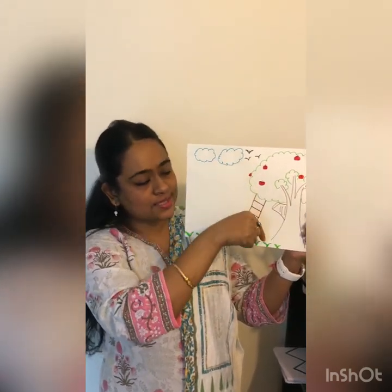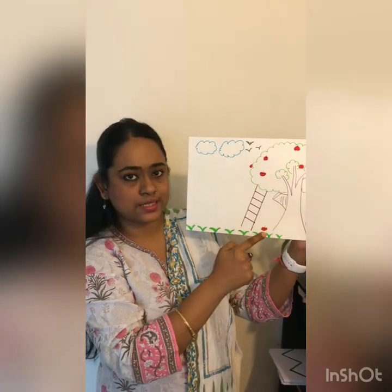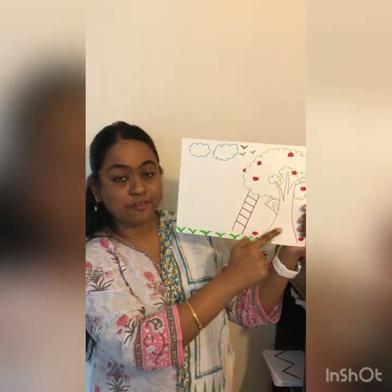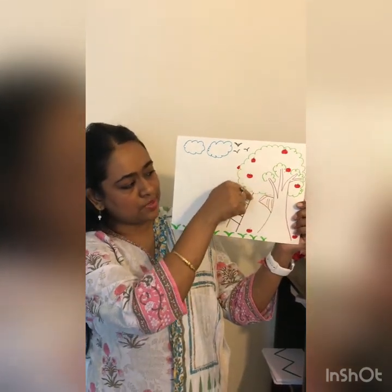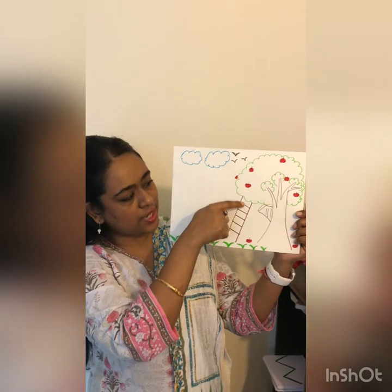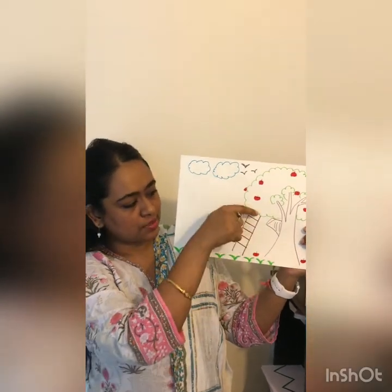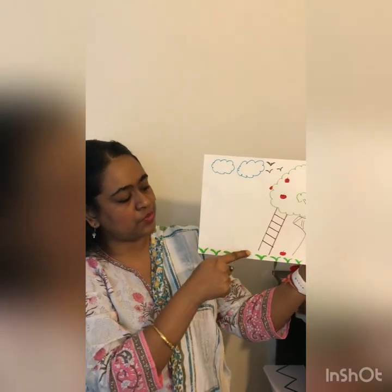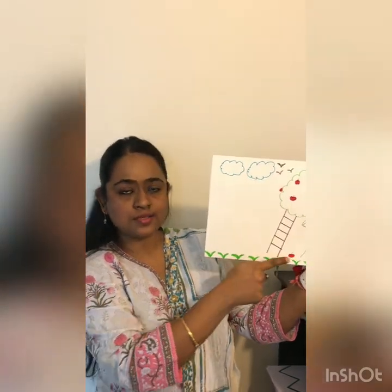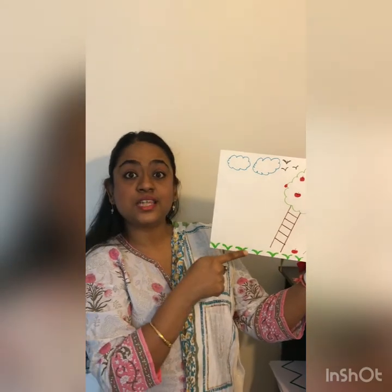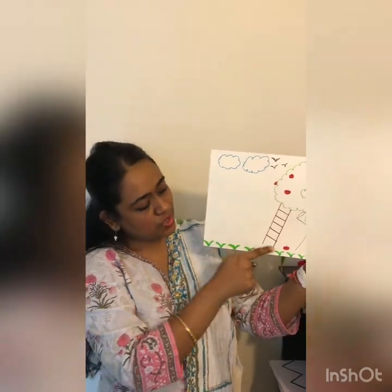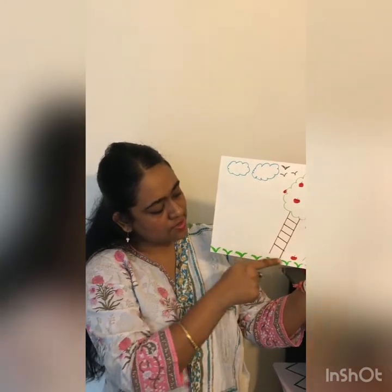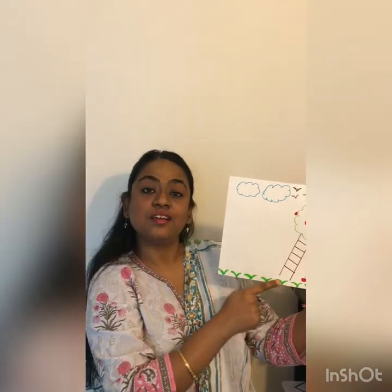Now let's look down and see what's down here. I see two apples have fallen down — apples have fallen down from the tree. And also there are some green grass. The grass is down. So we have apples and grass which are down.